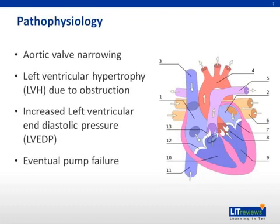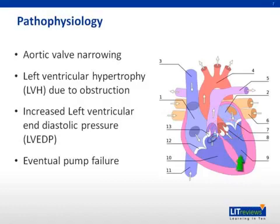The pathophysiology of aortic stenosis is related to the gradual development of aortic valve narrowing over a prolonged period of time, typically measured in decades. As the aortic valve (shown here as number eight) narrows, the left ventricle (shown here as number nine) hypertrophies. This initially leads to appropriate compensation as the LV is able to provide an adequate force.